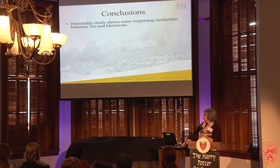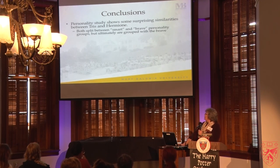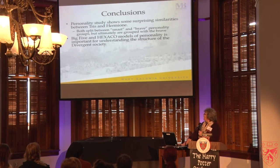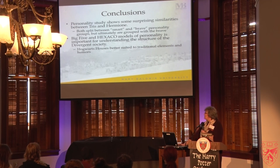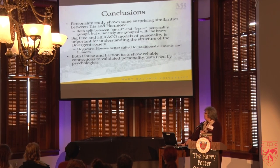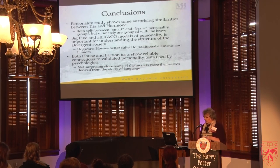My conclusions: looking at actual personality studies, you see very surprising similarities between Tris and Hermione — both are split between smart and brave personality groups but ultimately grouped with the brave. The Big Five and HEXACO models of personality are very important for understanding the Divergent faction system. Hogwarts houses are better suited to traditional elements and humors. But both of the tests that appear in these books show reliable connections to validated personality tests used by psychologists, which isn't surprising because many of these personality models originally developed from the study of the many adjectives we have to describe personalities. It's very natural that writers tap into these precise and powerful models of personality.